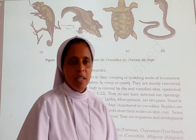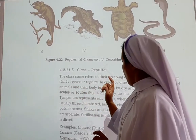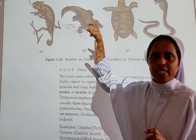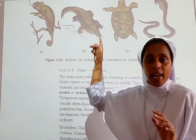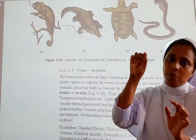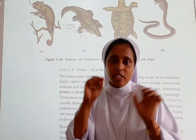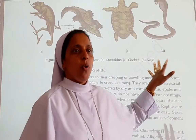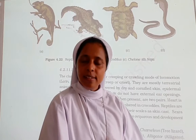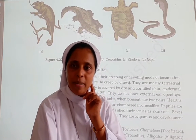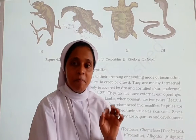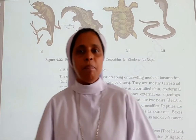Most reptiles are terrestrial animals. Their body is covered by dry, cornified, epidermal scales or scutes. Examples include crocodile, snake, turtle, and chameleon — all having a scaly body. They do not have external ear openings; instead they have a tympanum to represent the ear.